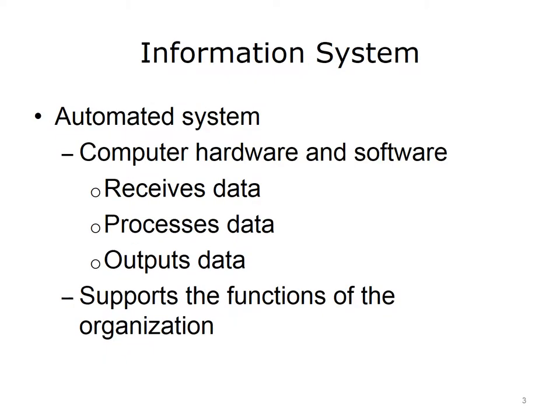Let's begin with a definition of an information system. American Health Information Management defines information system as an automated system that uses computer hardware and software to record, manipulate, store, recover, and disseminate data — that is, a system that receives and processes input and provides output.